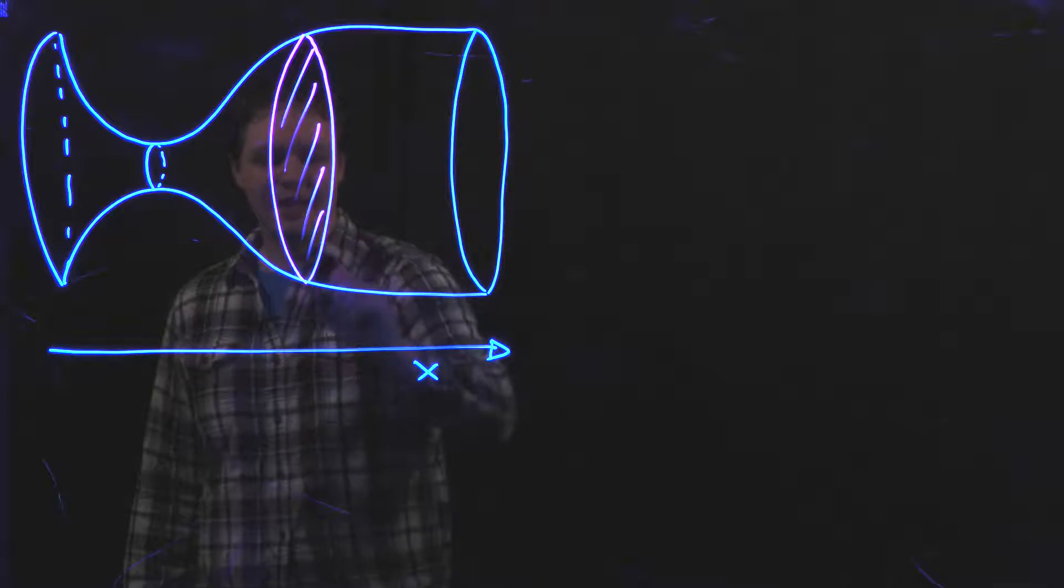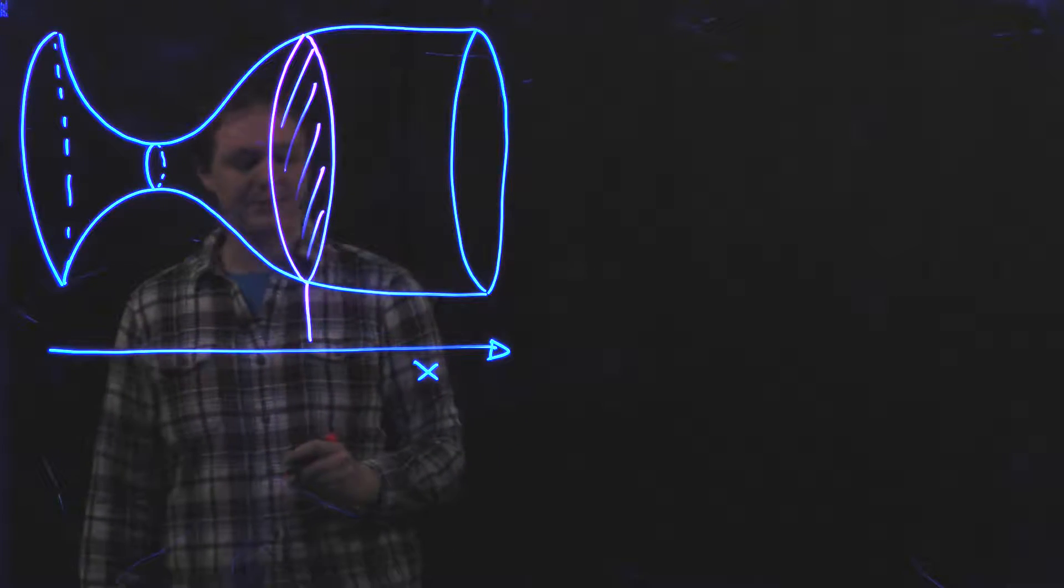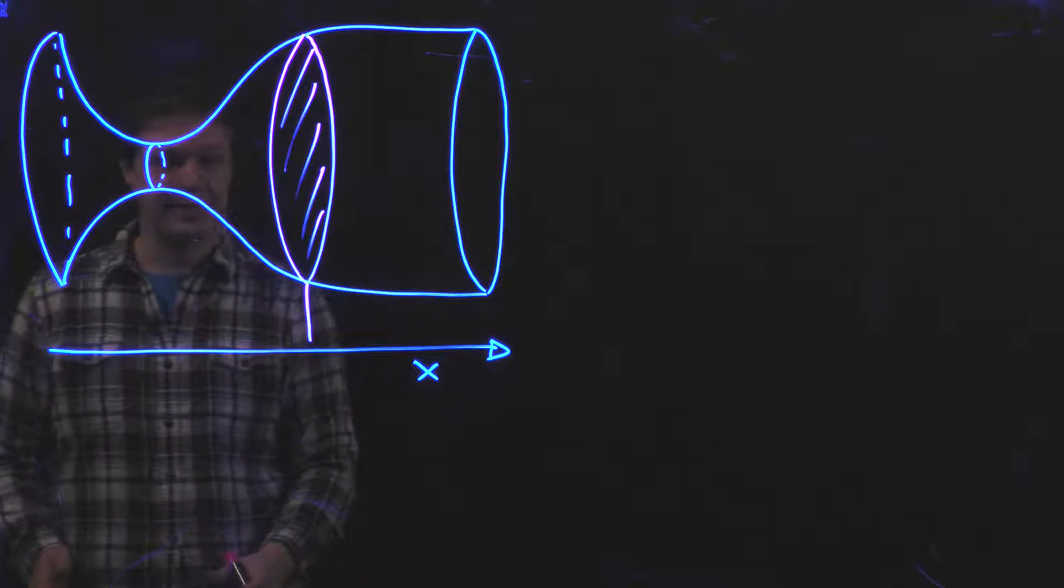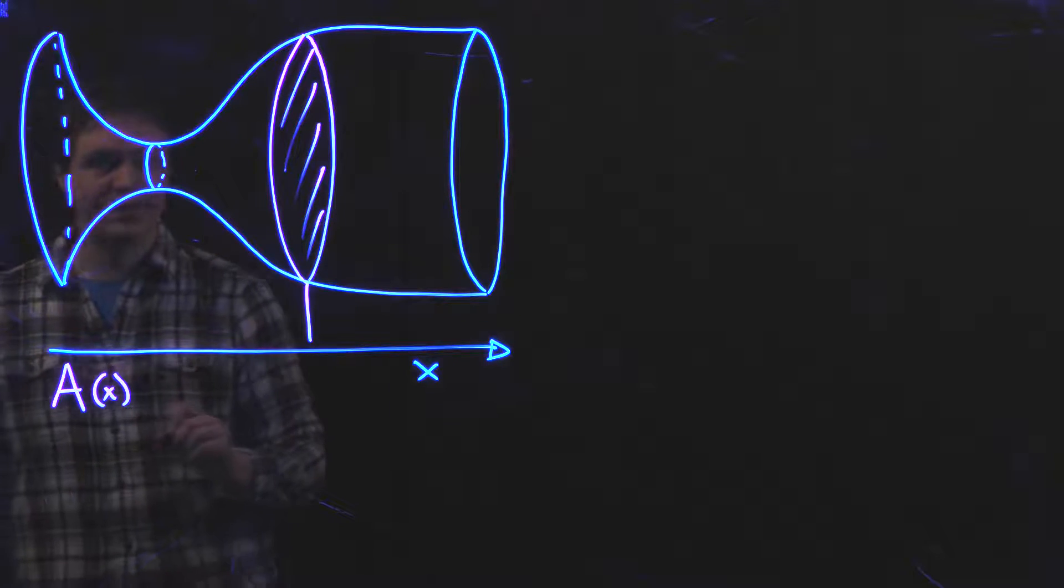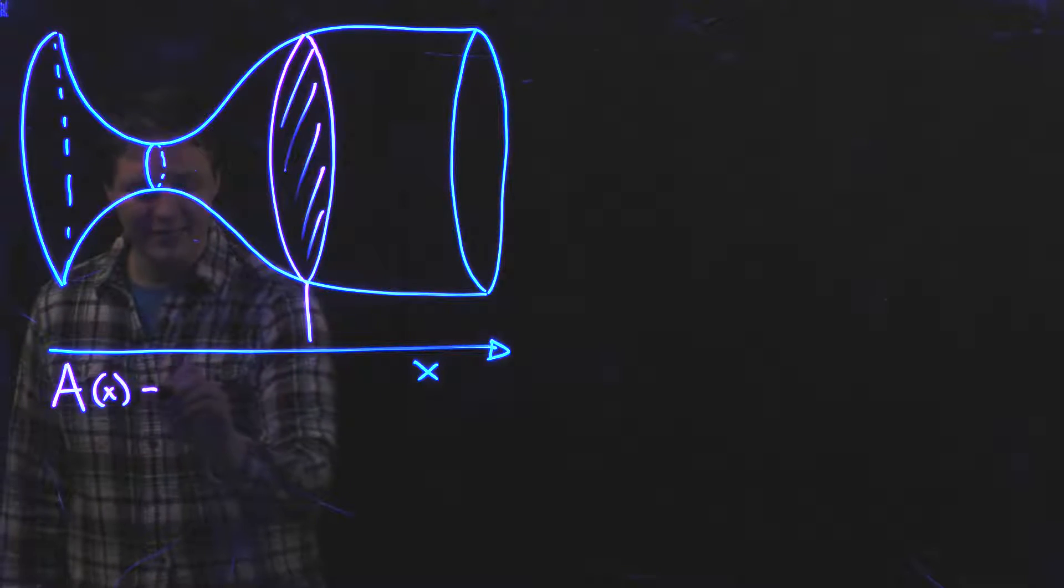If I look at a slice in the nozzle at a given x, there are several quantities that I'm going to be looking at. There is A, which is a function of x. This is the cross-sectional area.